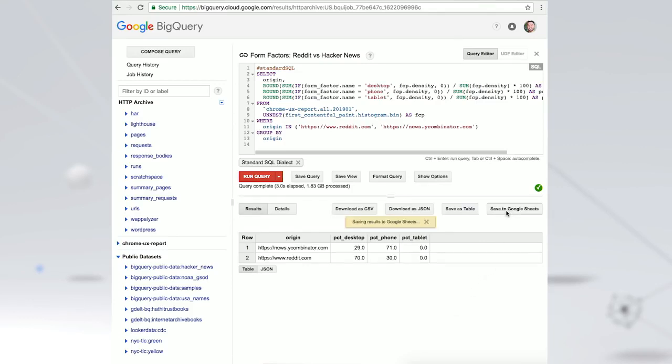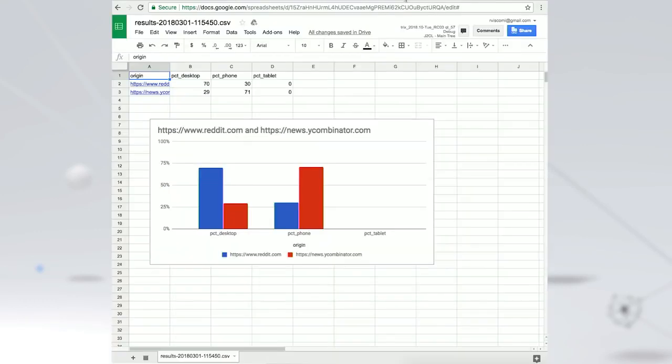Click Save to Google Sheets and the results will be transferred automatically. In a single click, we can visualize the raw data into a chart that really brings the form factor differences to life.